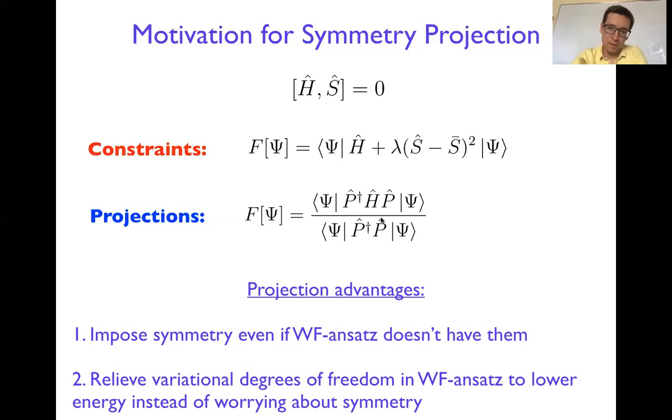Now why the second way is worth talking about because it has some advantages compared to constraints. Projection imposes symmetries even if wave function doesn't have ability to impose or to have those symmetries built in. And that's great because if you're operating with the unitary transformation that doesn't have capability to introduce the right symmetry, then this functional will be arbitrarily large depending on lambda because simply your function will not be able to satisfy the variance constraint. Also, the fact that essentially our projection will take care of the symmetry and relieve degrees of freedom that we have in the wave function just to lower the energy and not to worry about satisfying the symmetry constraints, because the P will take care of that.